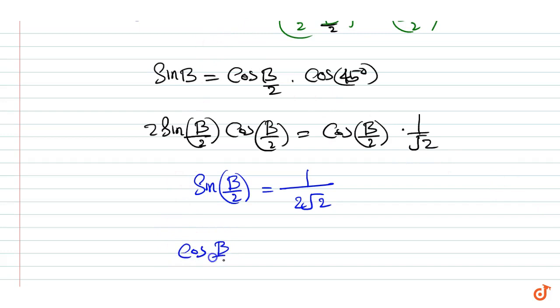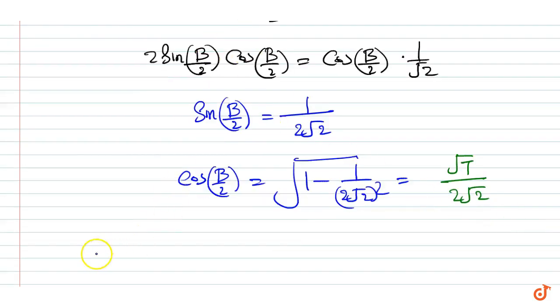Now cos b by 2 is equal to the square root of 1 minus 1 by 2 root 2 squared, which equals root 7 upon 2 root 2.